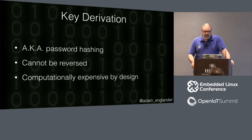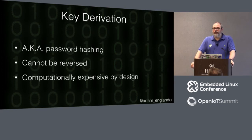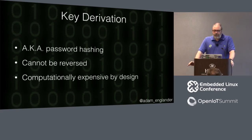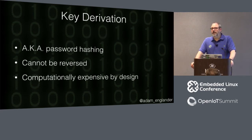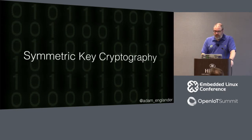Key derivation — most commonly known as password hashing. I try not to use the word hashing because it brings up memories of MD5 and SHA; this is not MD5 or SHA, although SHA is often used in key derivation functions. It cannot be reversed — same as a signature, you don't have to worry about it being out in the open. It's computationally expensive by design. A SHA-2 hash, even if salted, is not expensive; key derivation functions are extremely expensive to reproduce, and that's super important for your users.